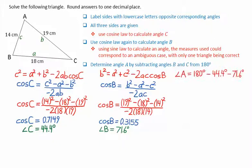We can then get the third angle by subtraction from 180 degrees, 180 minus 44.4 minus 71.6. This gives angle A equals 64.0 degrees.